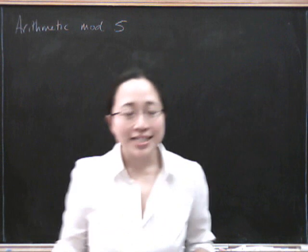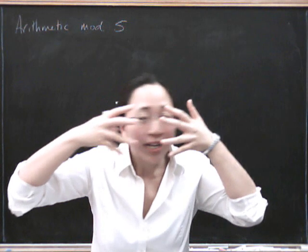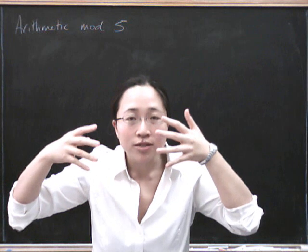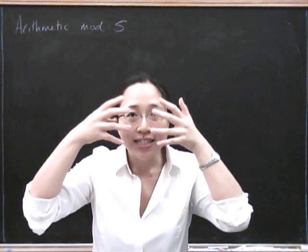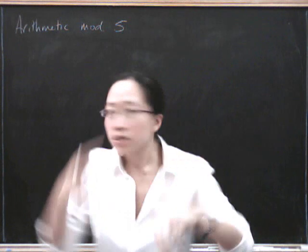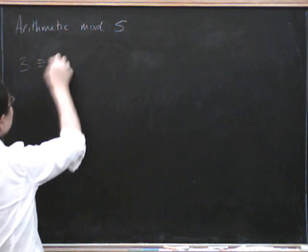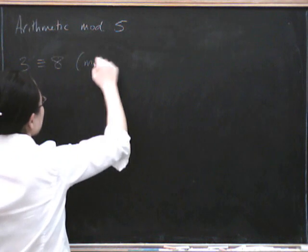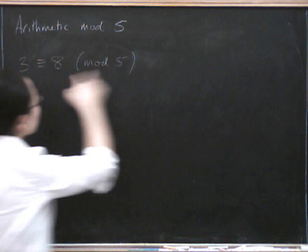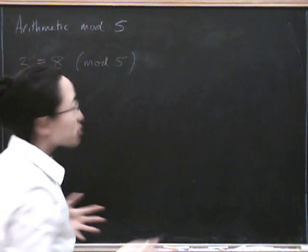Remember what this means is we've put some really funny glasses on so that wherever we look in the world, when we see numbers we don't see all the numbers, we only see the remainder after dividing by 5. So for example, we know that 3 is going to be congruent to 8 mod 5 because if you try and divide 8 by 5, then the remainder you get afterwards will be 3.